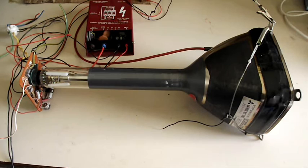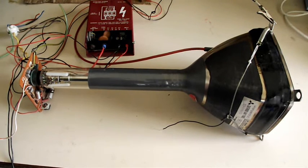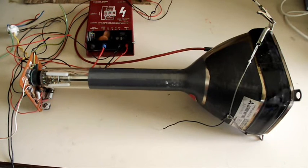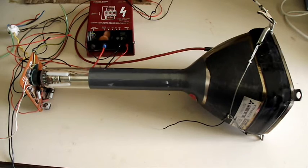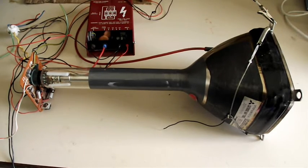This is another monochrome cathode ray tube. It's out of a projector television so it's a red screened CRT. These are designed for high light output and we've connected it up the same way.